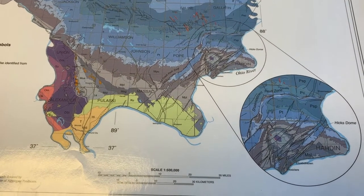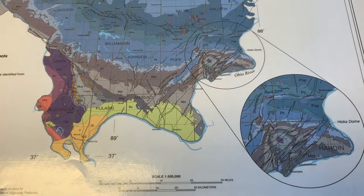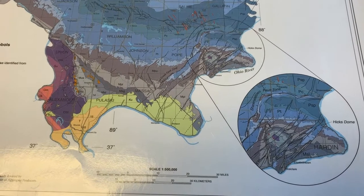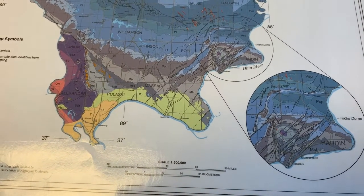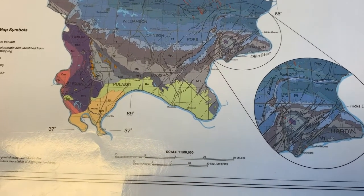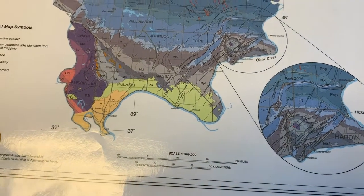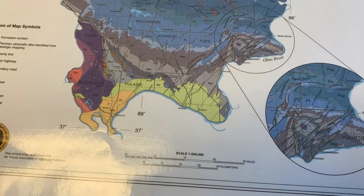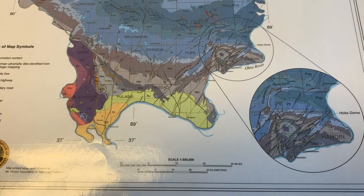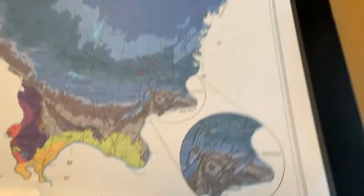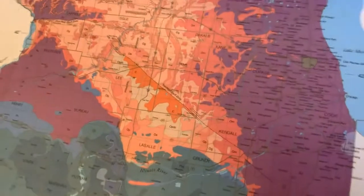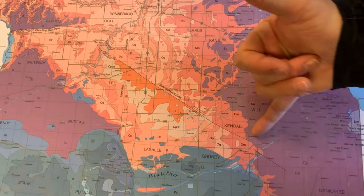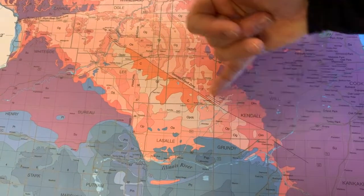The New Madrid fault system is named after New Madrid, Missouri, where there were large earthquakes in 1811 and 1812. It's thought that magma came up from below and melted the crust in a wide zone across southern Missouri, Illinois, and northern Kentucky and Arkansas, causing the crust to drop down and fault. This is considered a failed rift — a stalled system. The longest fault, however, is in the northern part of Illinois — the Sandwich fault, a very large fault line.